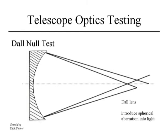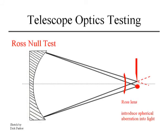Another way to get a null test is to take some auxiliary optic — a Ross lens — and introduce it into the outgoing light beam, adding spherical aberration so that by the time the light returns and is measured, you get a null return. A test similar to this was used in testing the Hubble Space Telescope. One critical requirement: the spacing between the light source and the mirror must be very precisely controlled, or error is introduced. This is a good test, but it's more often used for much larger diameter mirrors — 20 or 24 inches.